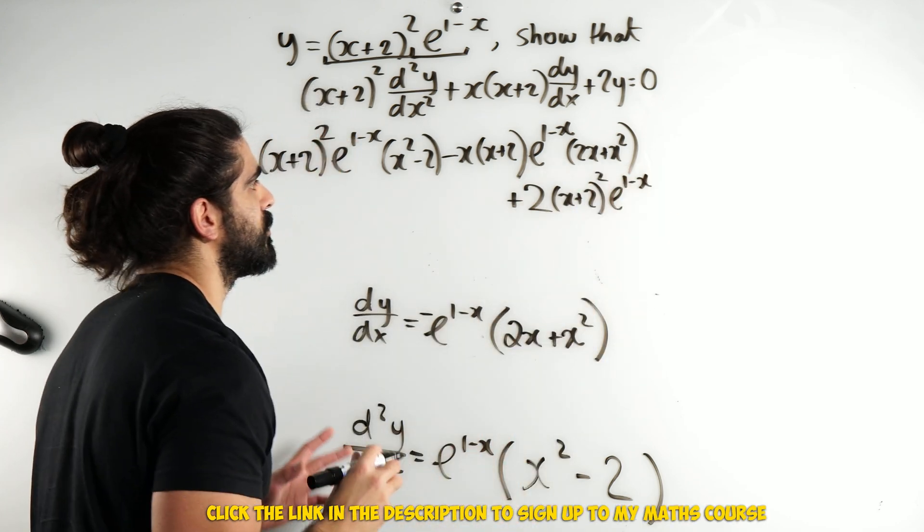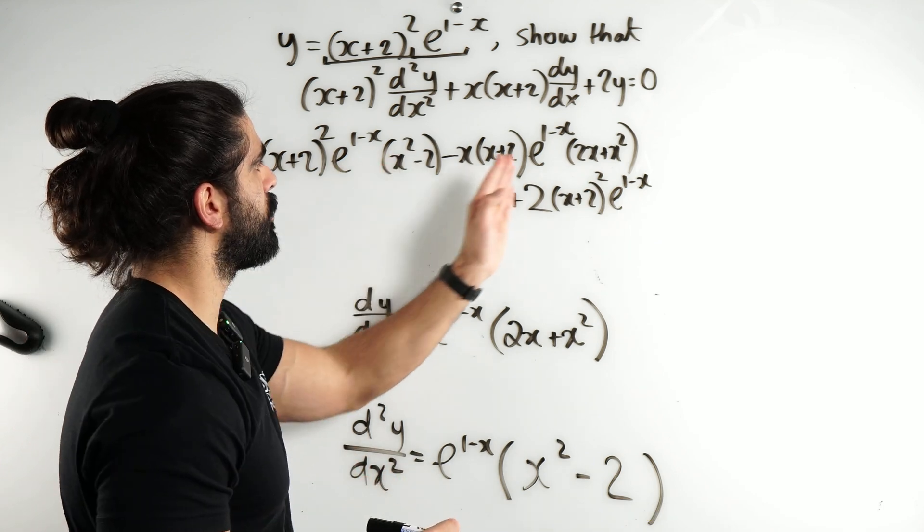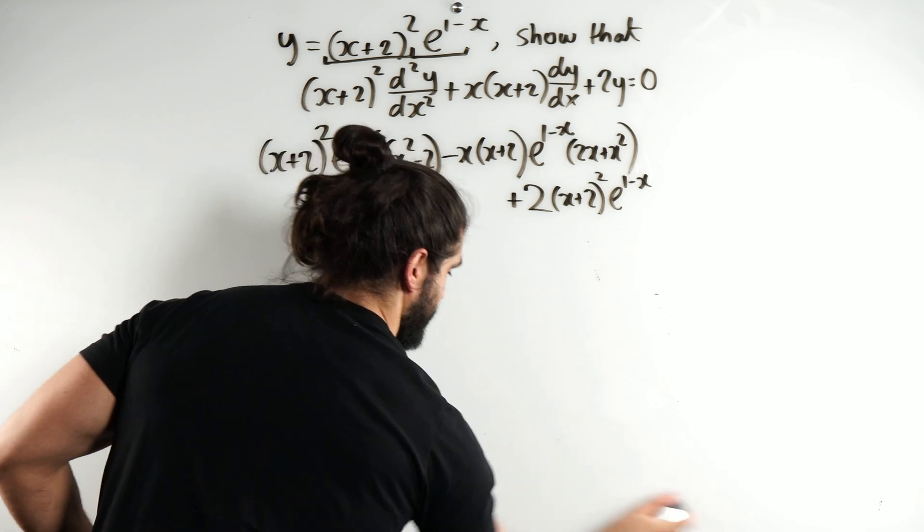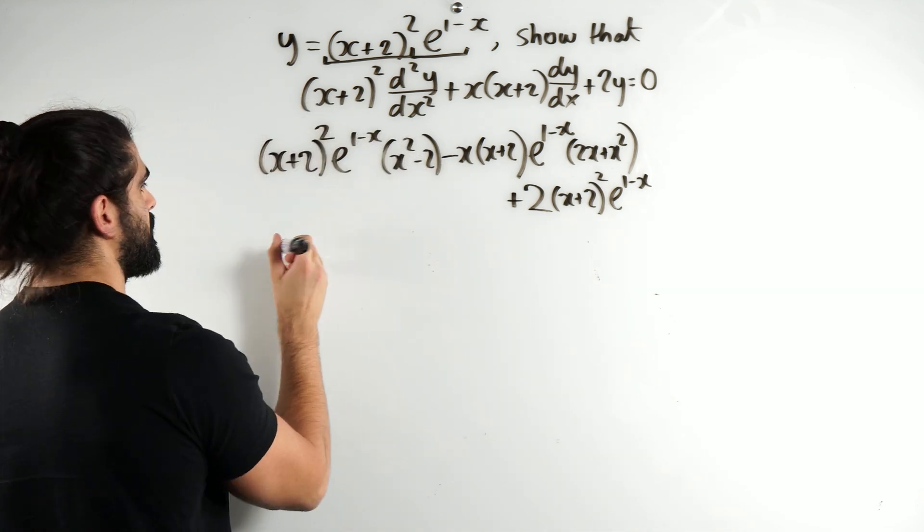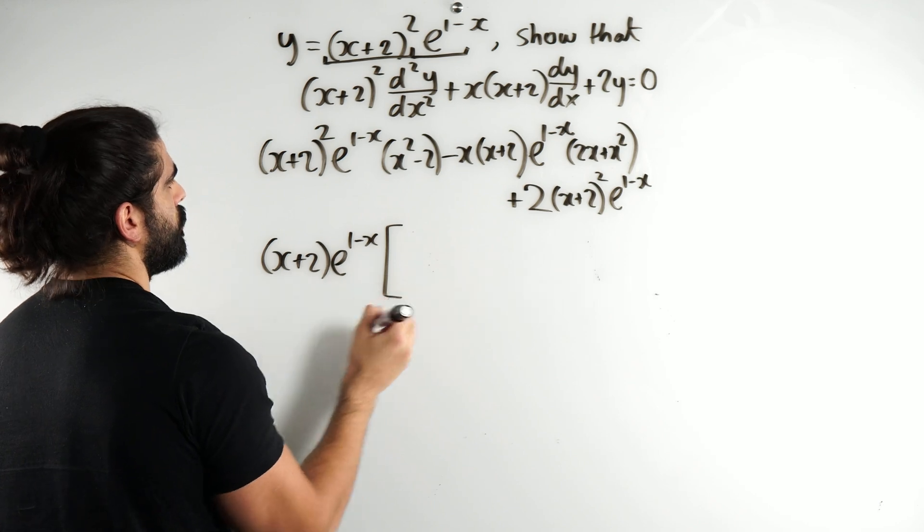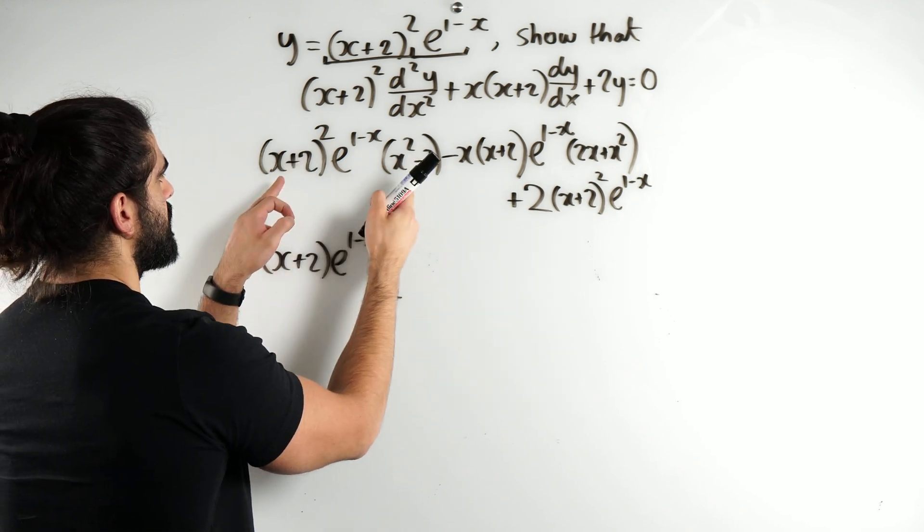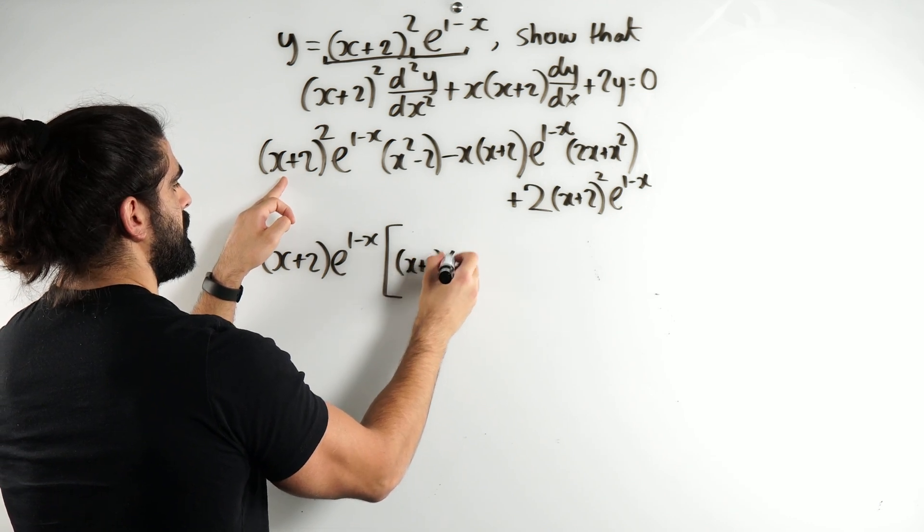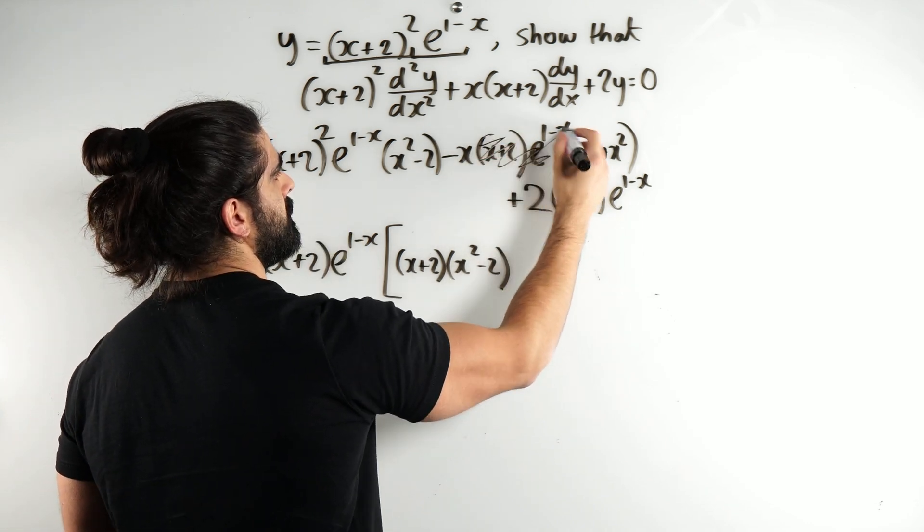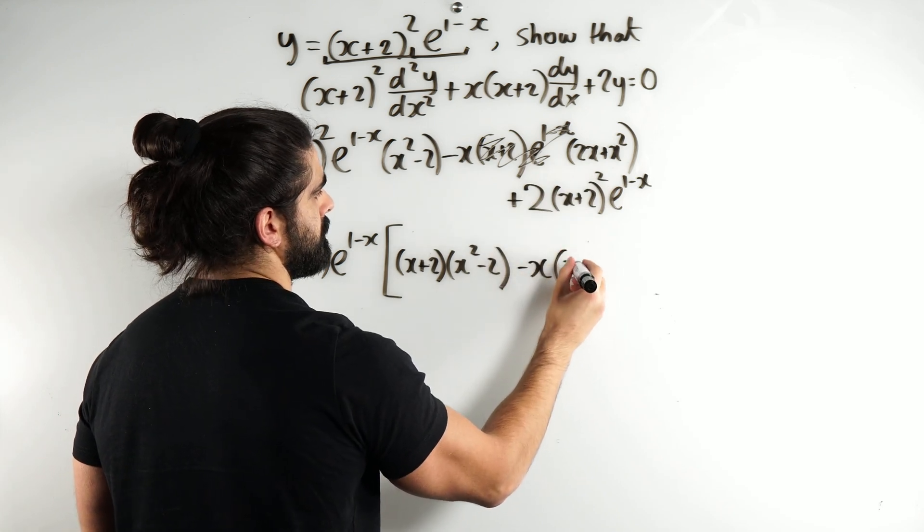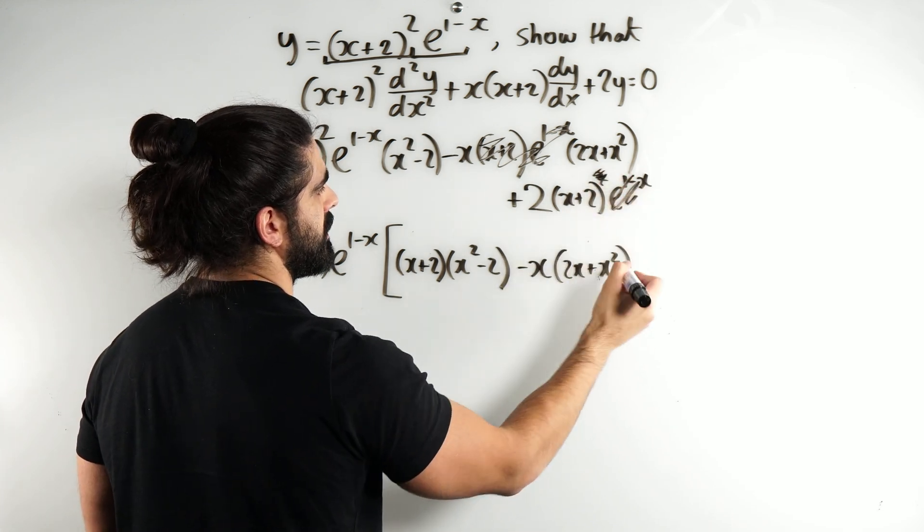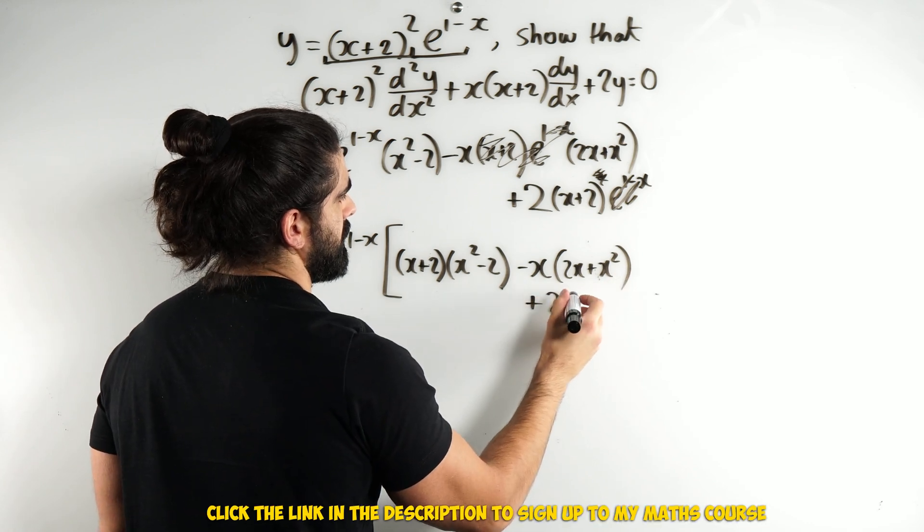Now, we need to prove that equals 0. What I notice is everywhere has e to the 1 minus x and an x plus 2. So, I'm going to factorize that out. First, I'm going to get rid of this. So, taking out x plus 2, taking out e to the 1 minus x, what are we left with? We'll be left with x minus 2 times this. So, we have x plus 2 times x squared minus 2. We've taken out all of these, so we're left for minus x slots of this.